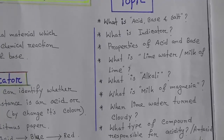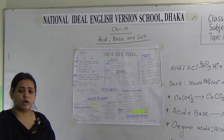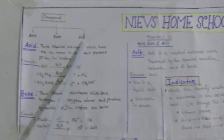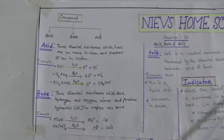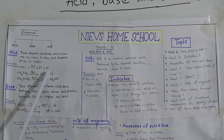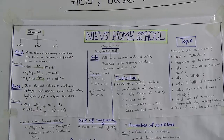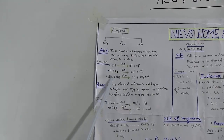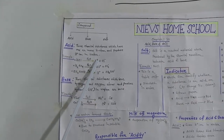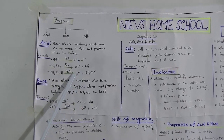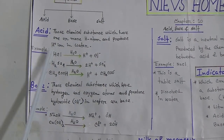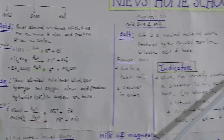Dear students, we know that there are so many compounds around us. These compounds are divided into three parts: acid, base and salt. Our first topic is what is acid. Acid is those chemical substances which have one or more hydrogen atoms and produce hydrogen ions in water. For example, hydrochloric acid, sulfuric acid, and acetic acid — when we put these in water, they release hydrogen ions.